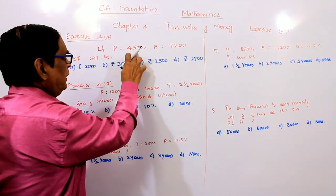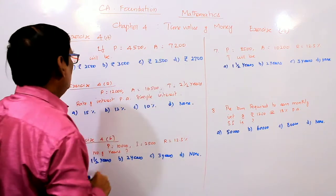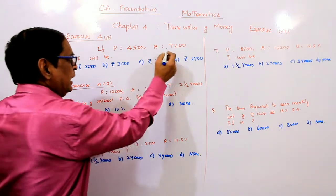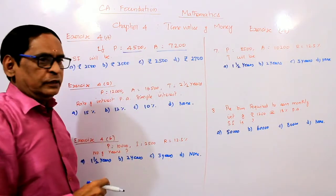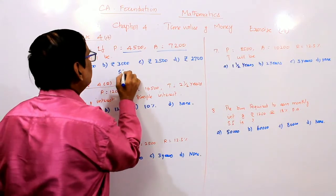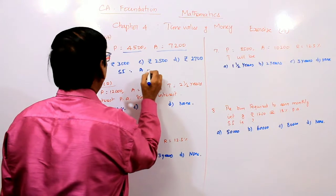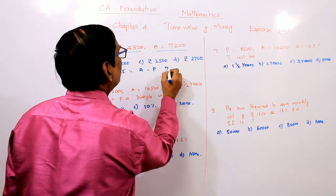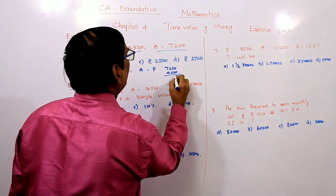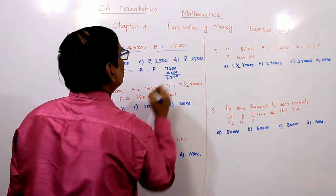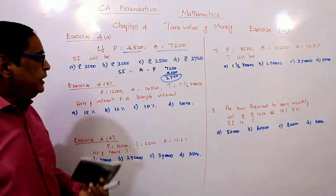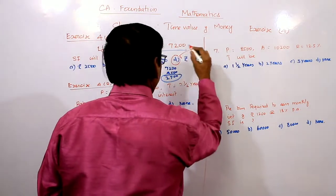Next: If P = 4,500 and A = 7,200, find Simple Interest. Simple Interest equals A minus P, so SI = 7,200 minus 4,500 = 2,700. The answer is 2,700. D is the correct answer.